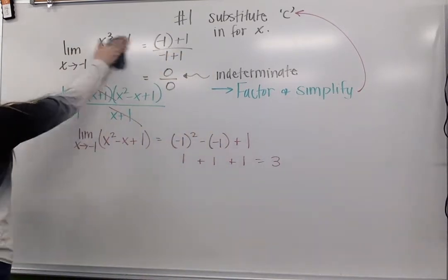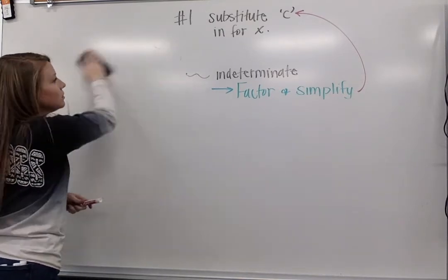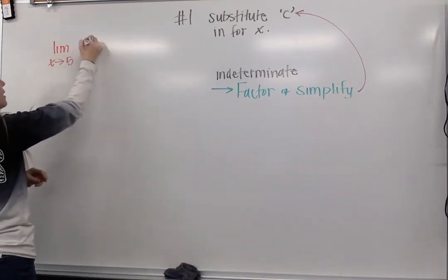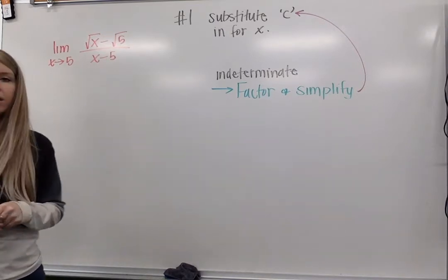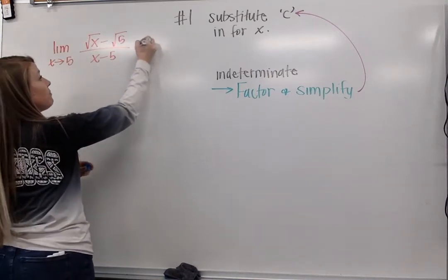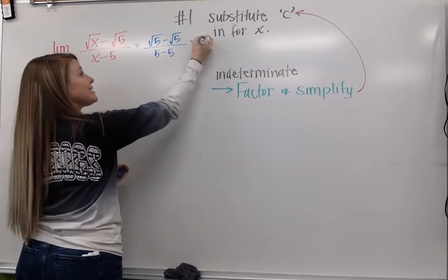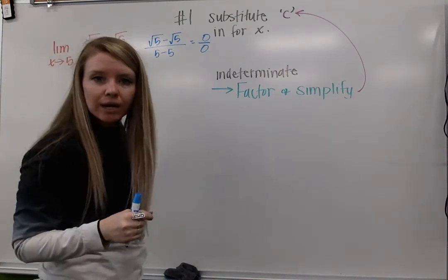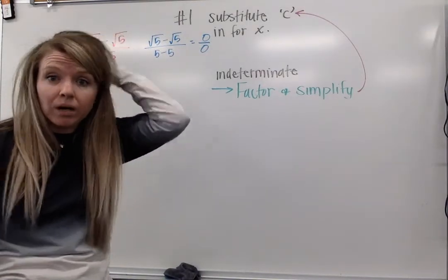Let's look at another example. We are going to look at the limit as x approaches 5 of (√x - √5) / (x - 5). The first thing I'm going to do is substitute in. If I substitute in 5, I'm going to get (√5 - √5) / (5 - 5), and that's going to give me 0 over 0. My limit doesn't equal 0 over 0, so I erased my equal sign, because this is an indeterminate form. Again, it's telling me I've got to do more work.